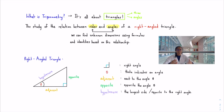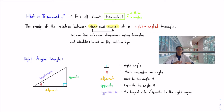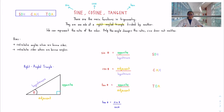This symbol is called theta — a Greek letter — and all it does is indicate an angle. To identify the opposite and adjacent sides, we look at the position of theta. The side opposite to theta is the opposite side, and the side next to theta is the adjacent side. If theta were on the other side, the opposite and adjacent would swap accordingly — so pay attention to the positions.